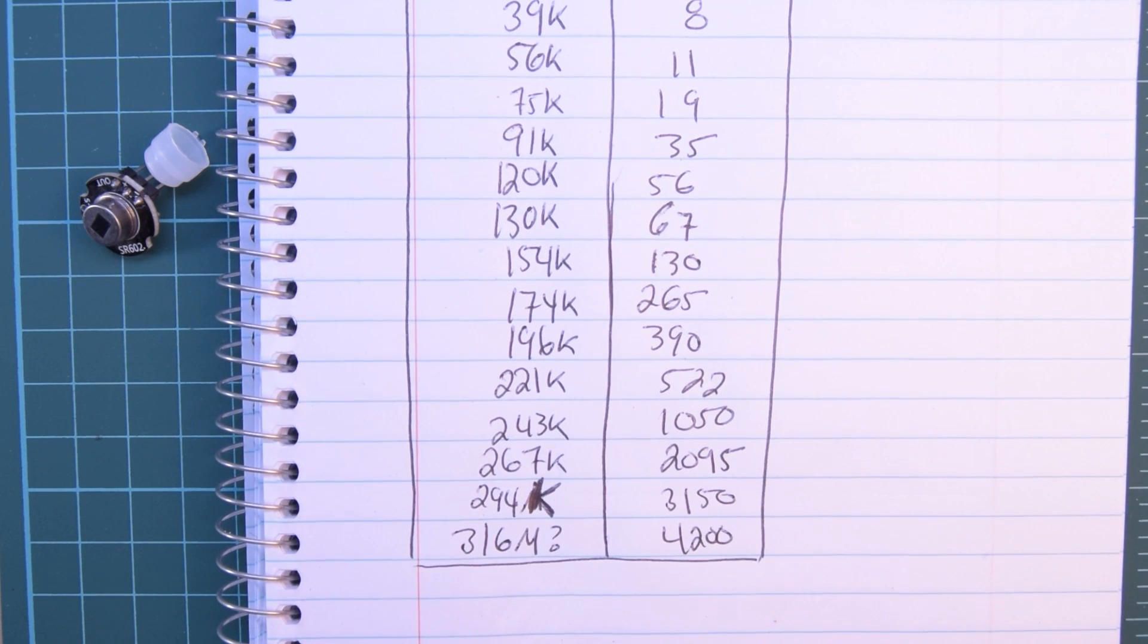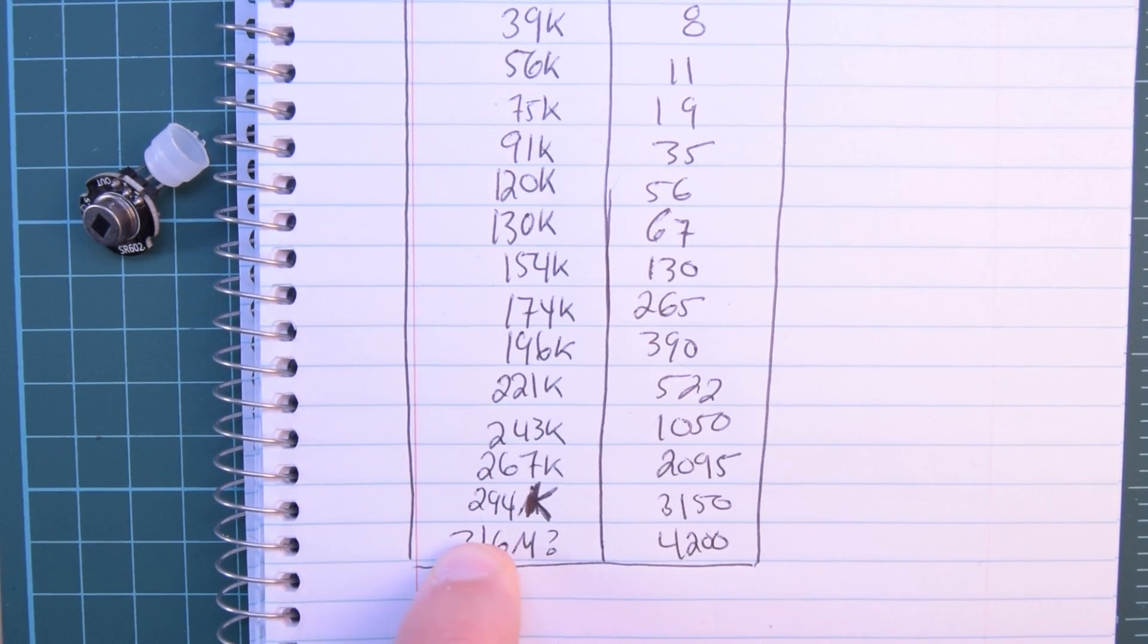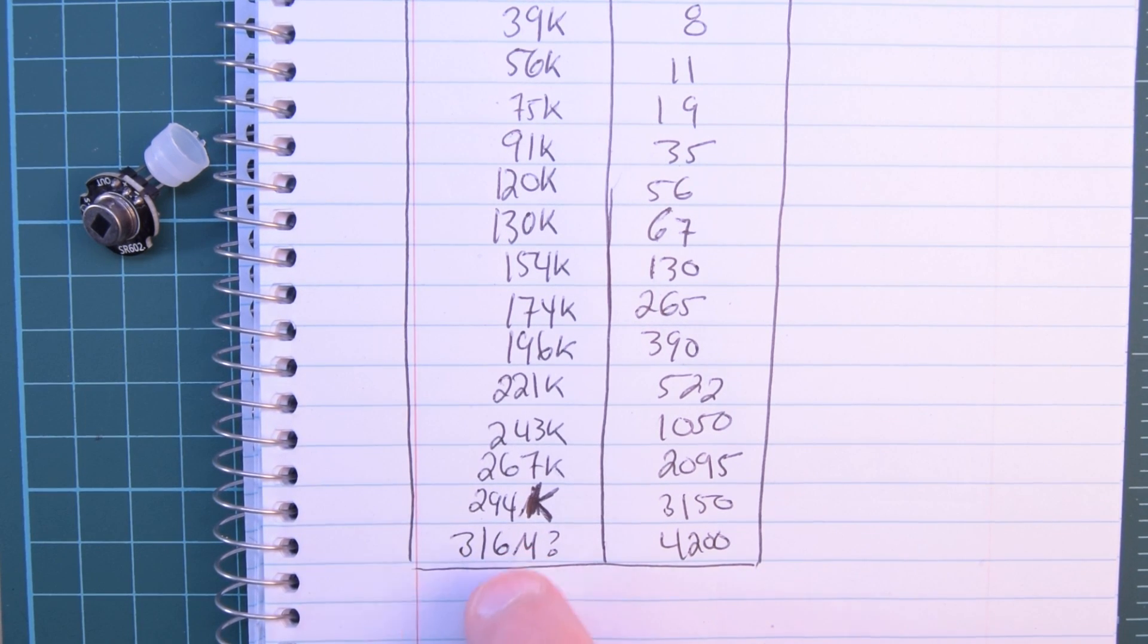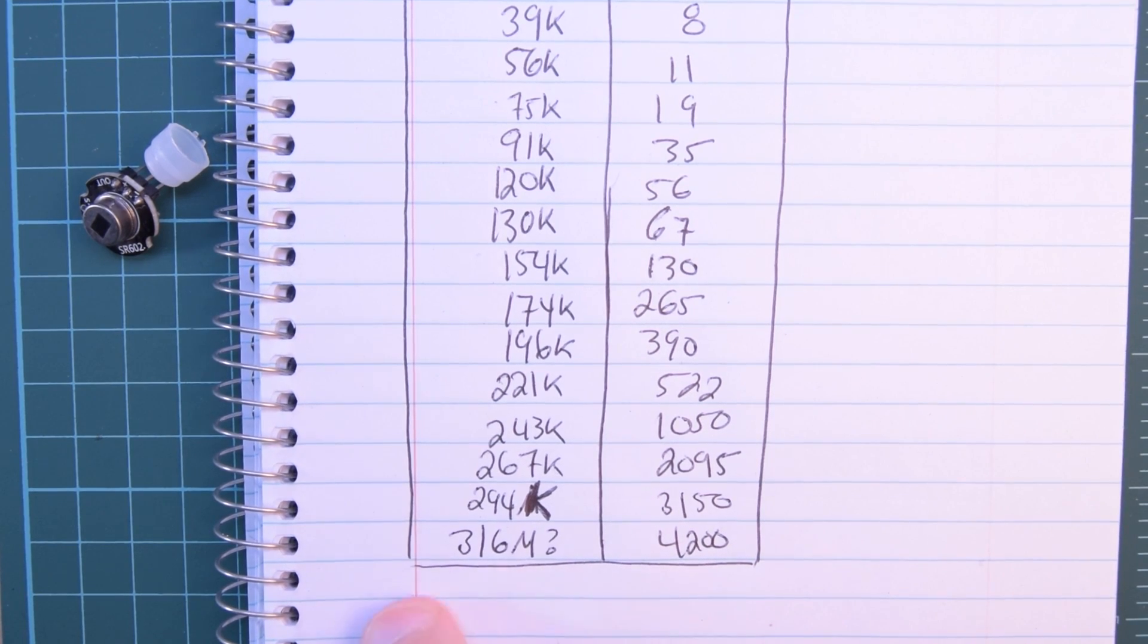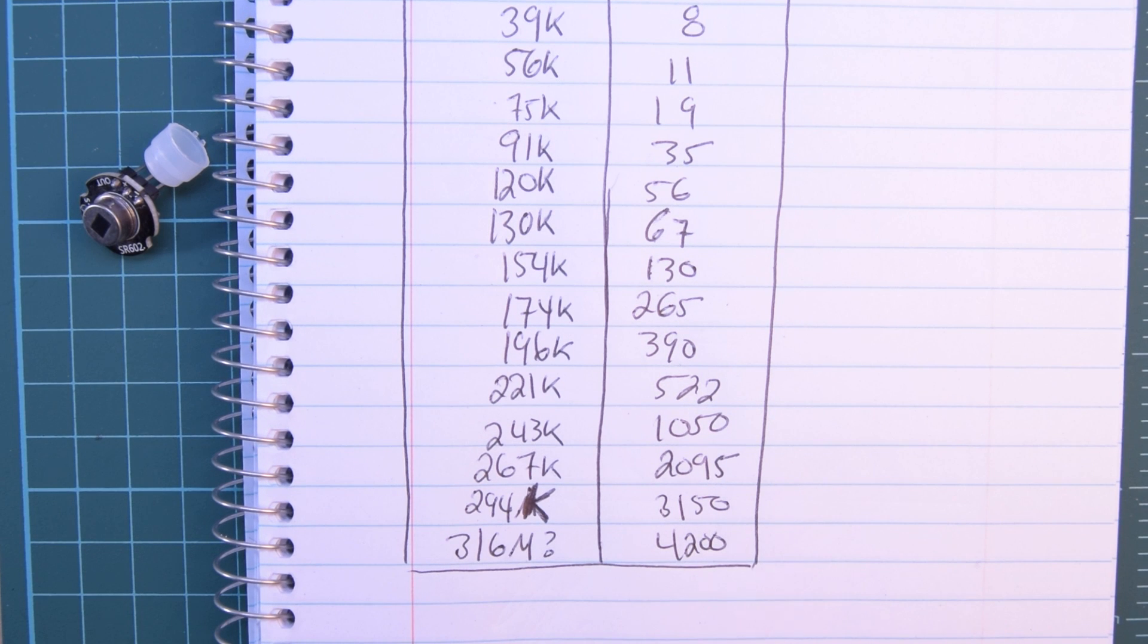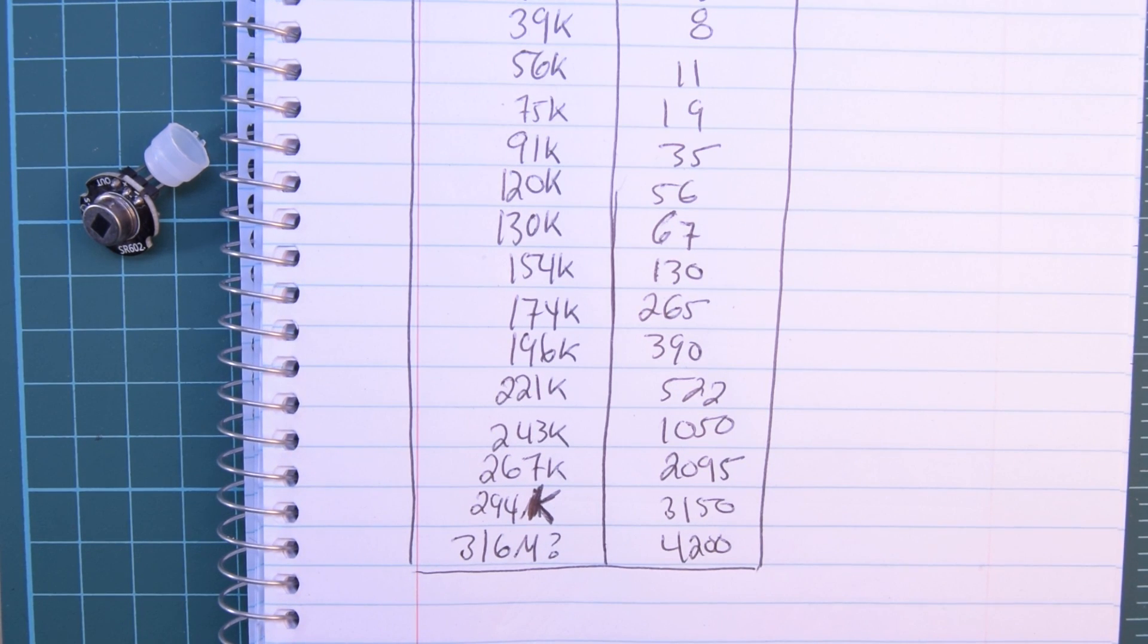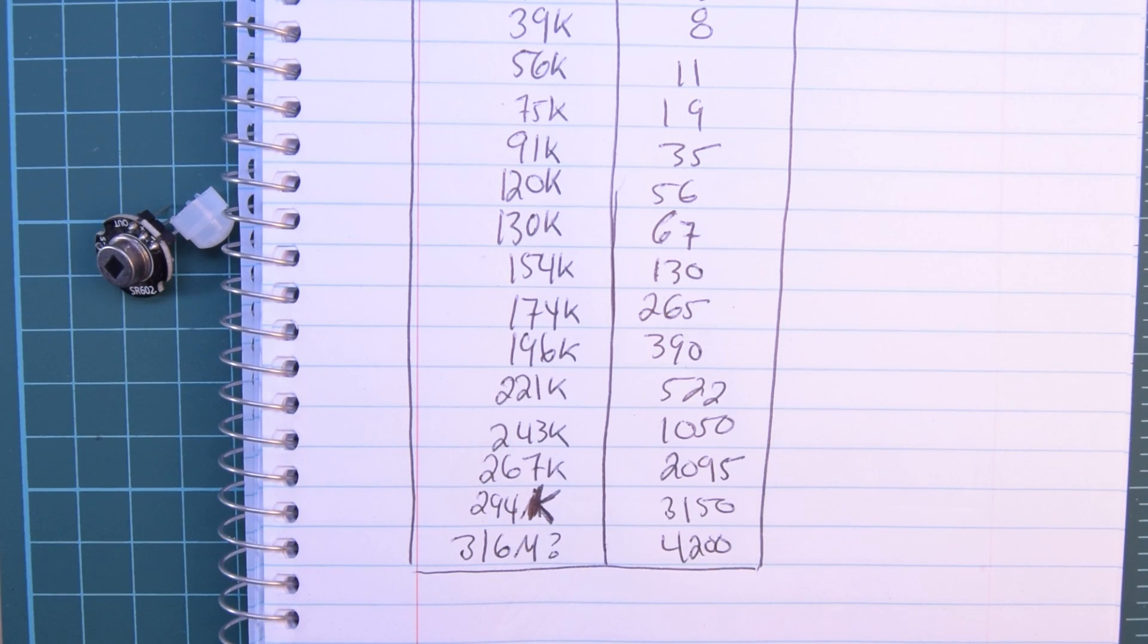The only thing I will caution you is down here. It says 316 meg. And the other one is 294k. I believe that's 316k. So, be careful on that one. But yeah, that'll give you delays. This is tested up to 4200 seconds. Divide that by 60 to get the minutes. So, let's take a look at the back side of this so we can see where those resistors go.